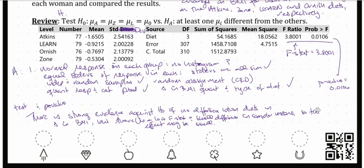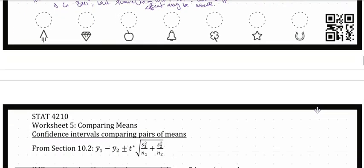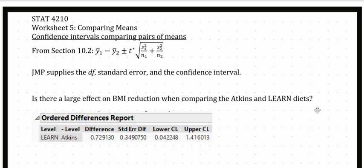There is strong evidence against the null hypothesis of no difference between diets in change in BMI, but there is a low F-statistic and small differences in the sample means, so the effect may be small. It's still worth following up. Because we have evidence against the null that at least one of our means differs, we can now do a follow-up analysis. Only because we have evidence to indicate that at least one of our means differs can we proceed and do confidence intervals to investigate which group means differ.